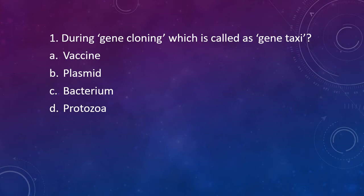Question 1: During gene cloning, which is called as 'gene taxi'? Option A: Vaccine. Option B: Plasmid. Option C: Bacterium. Option D: Protozoa. The correct answer is Option B — Plasmid, which is a vector, is called as gene taxi.